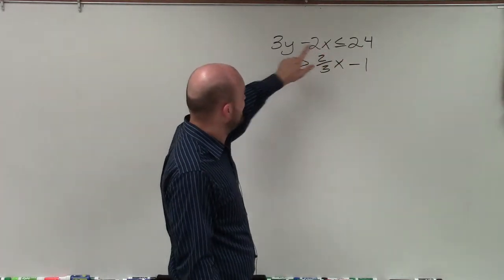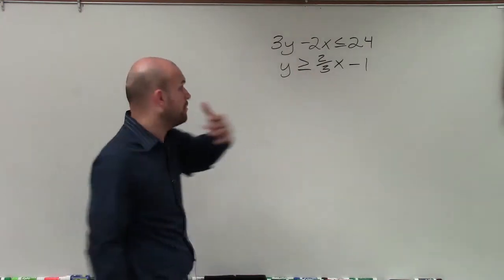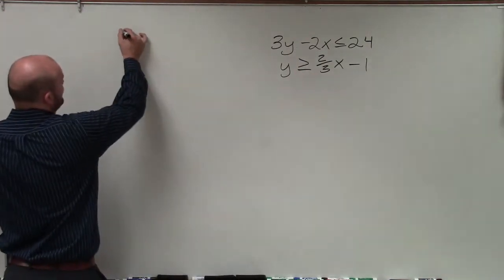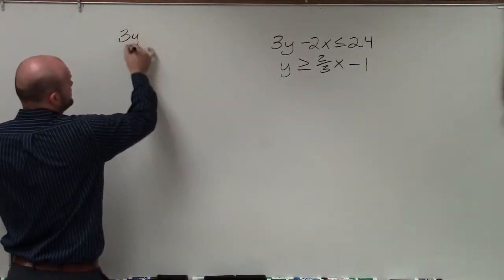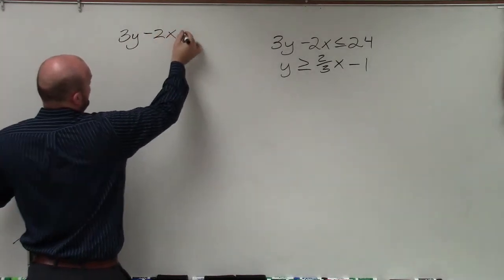because my c, or 24, is divisible by my a, b, or the coefficients of my x and my y. So remember, when graphing intercept form, I am going to write this as an equation here.